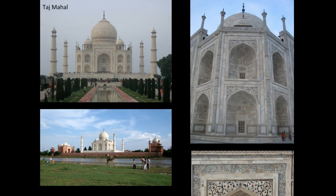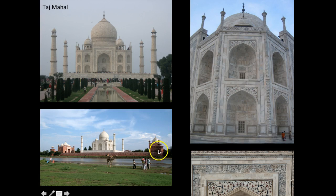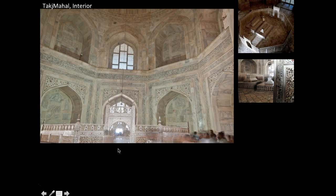Here's another picture showing the mosque, the Taj Mahal, and the flanking building, where you can see how the red sandstone really makes the white marble pop against the skyline. This is what the inside of the tomb looks like.